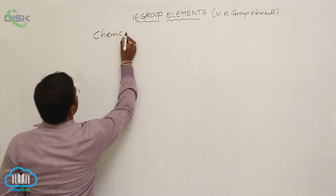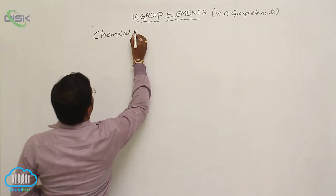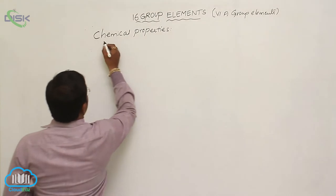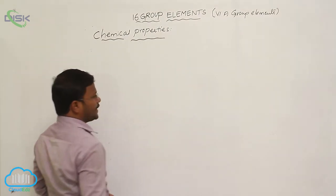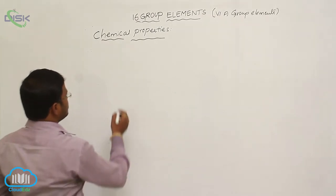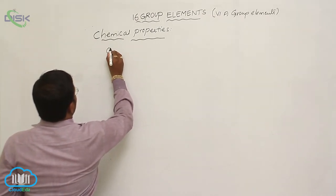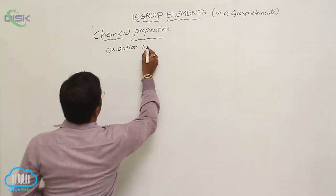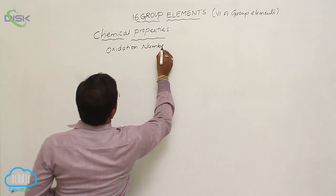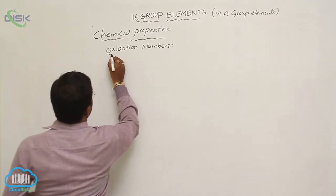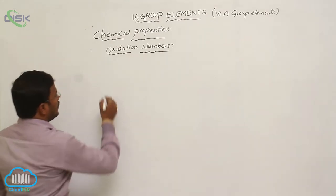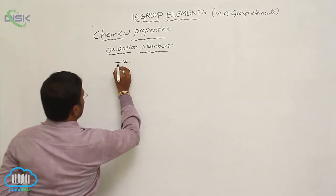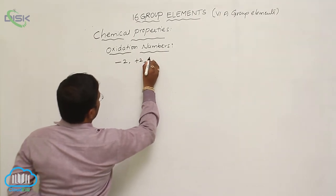We will now discuss the chemical properties of Group 16 elements. These chemical properties explain the chemical reactions and reactivity of these elements. The first topic is oxidation numbers, also called oxidation states. The elements belonging to this group generally show -2, +2, +4, and +6 oxidation states.